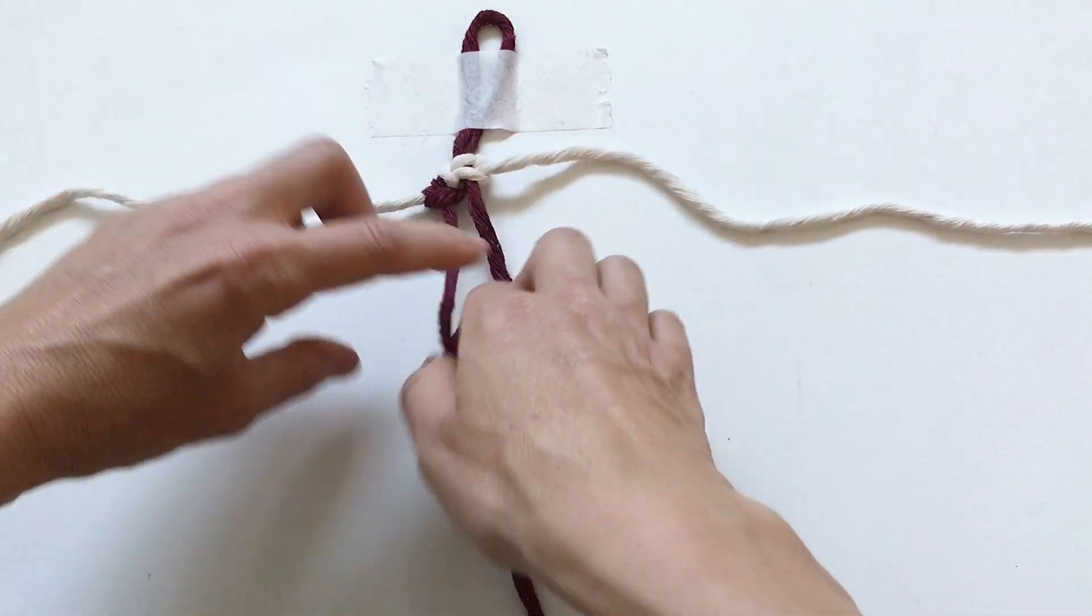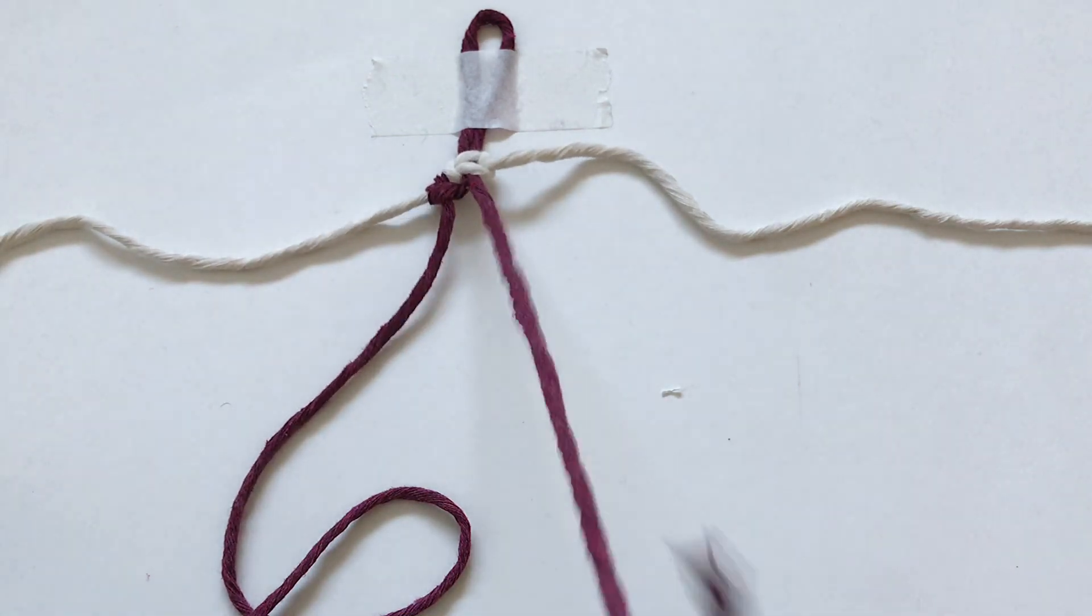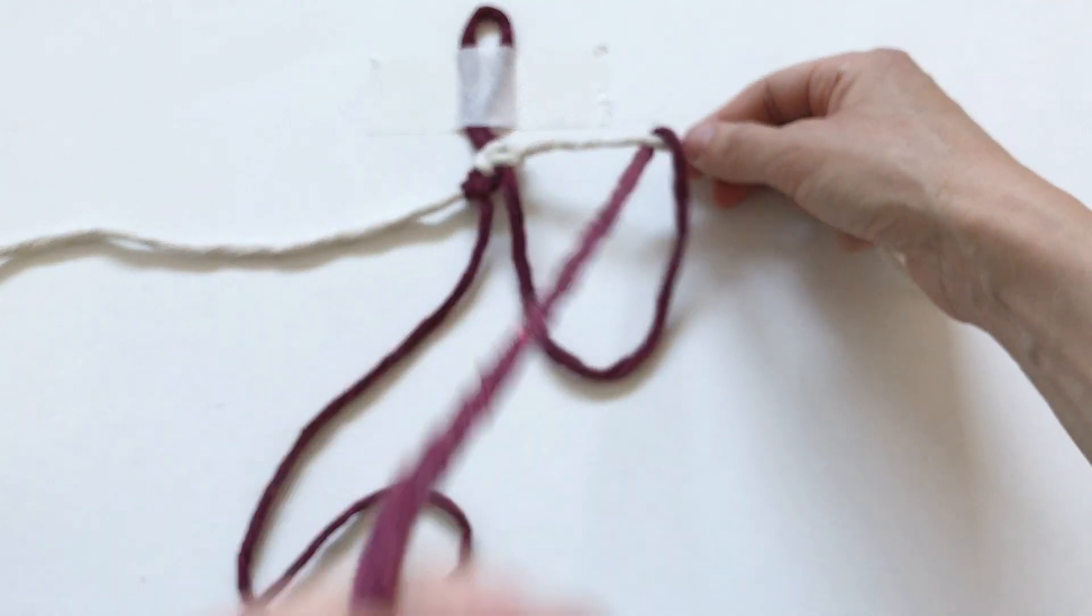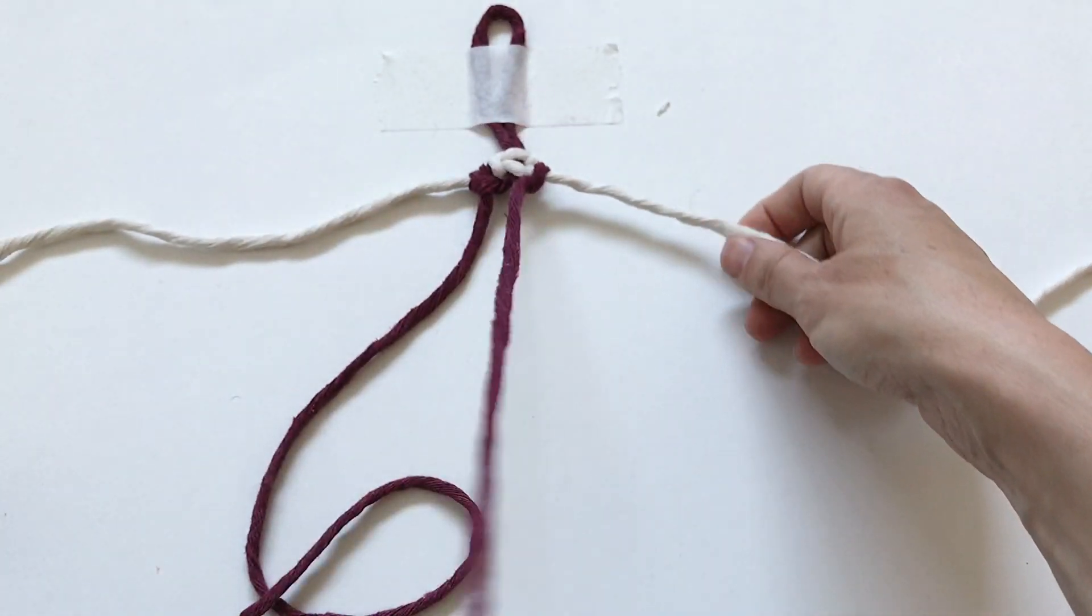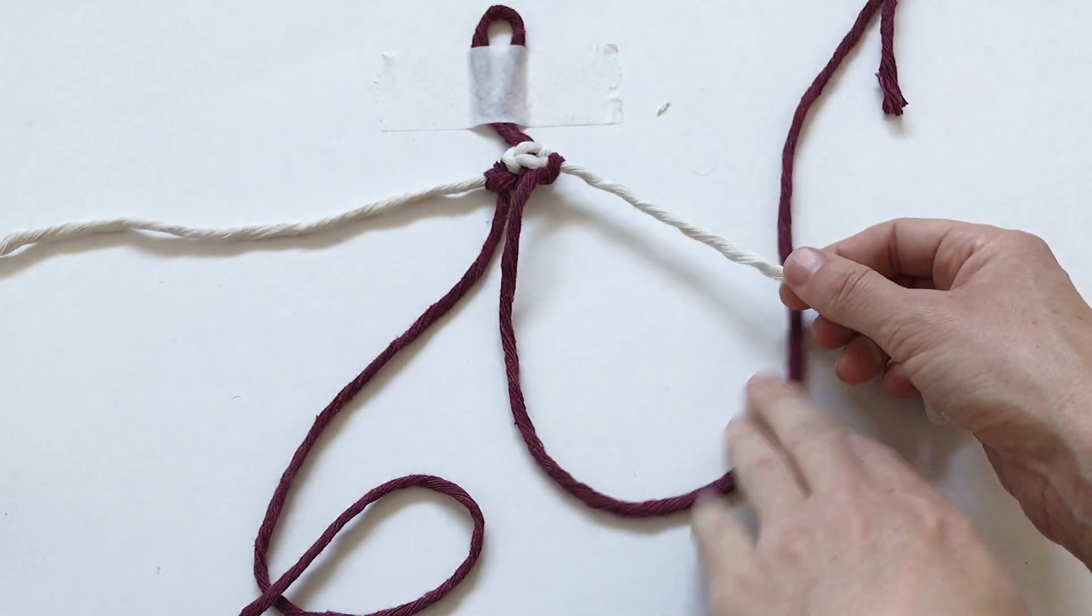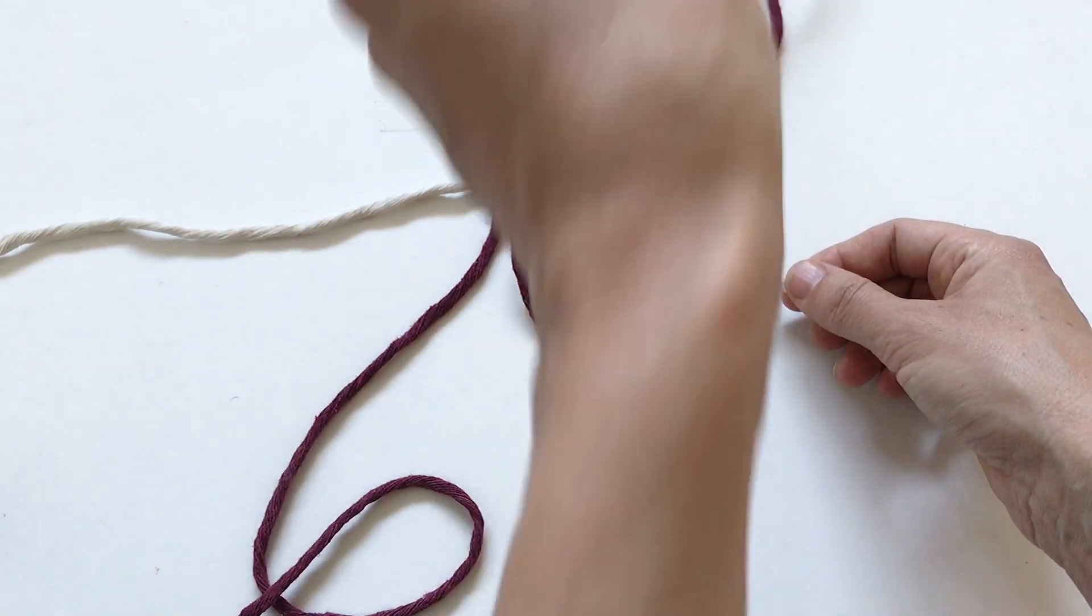There's the first one. We're going to do it one more time over here. To start, we go over, behind, and through the loop, and pull it. Next I'm going to go behind so it forms like that, then take it over the red and down through this loop. Pull that.